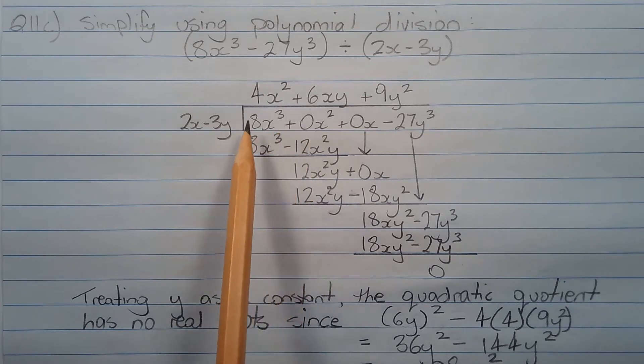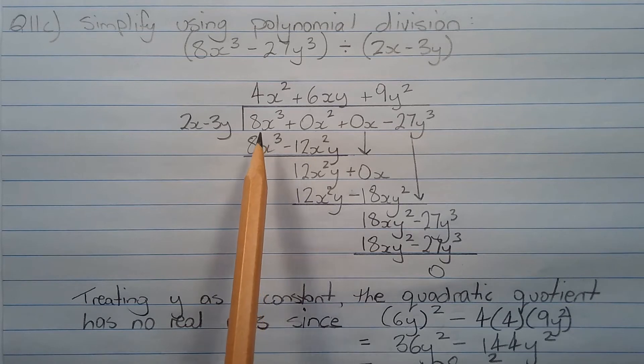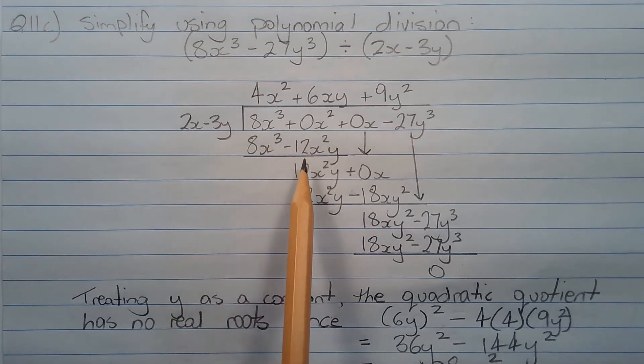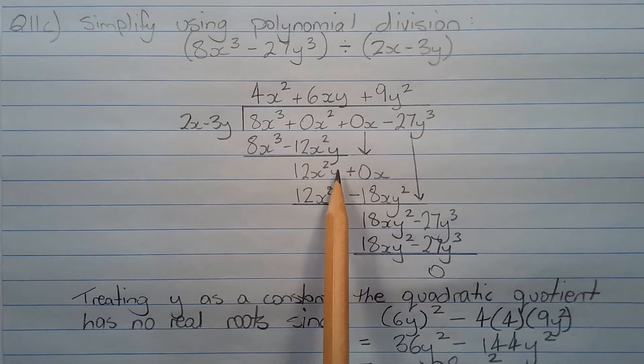Then we subtract these terms. So 8x cubed plus 0x squared minus 8x cubed minus 12x squared y gives us 12x squared y. Then we drop this term here, so plus 0x, and repeat the process again.